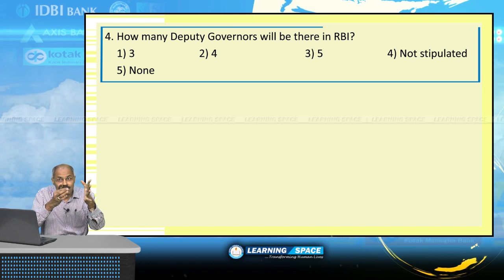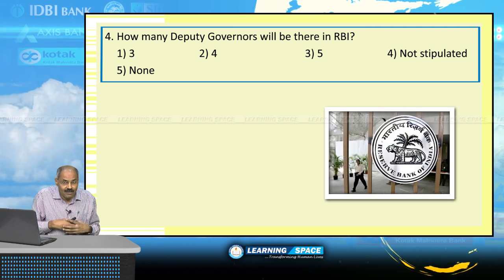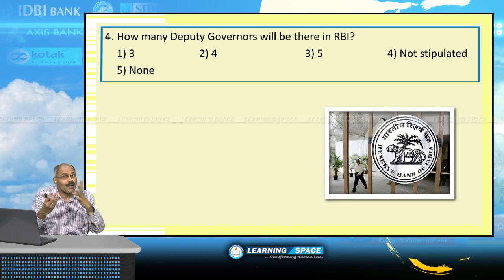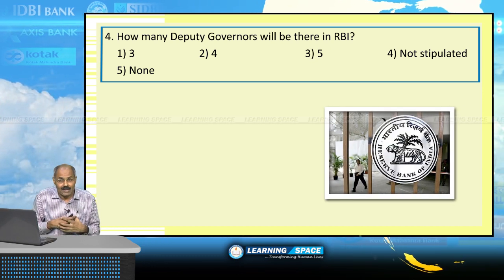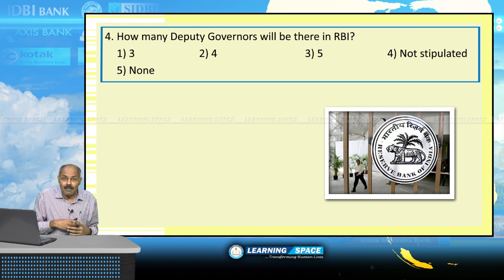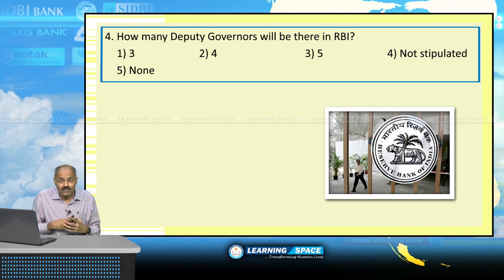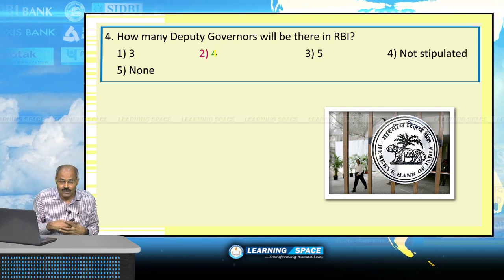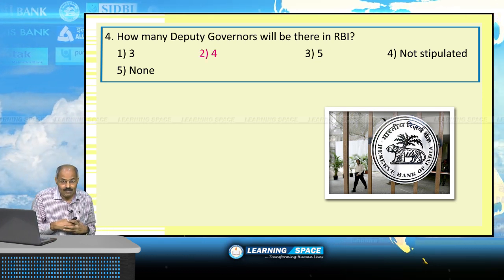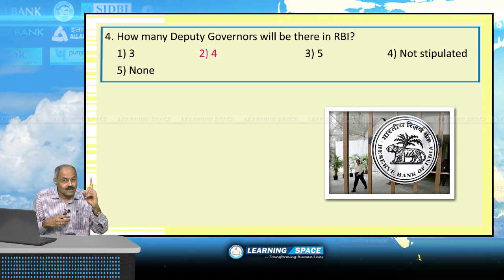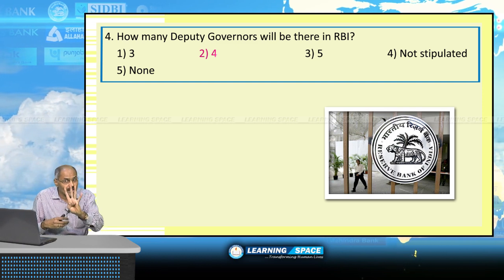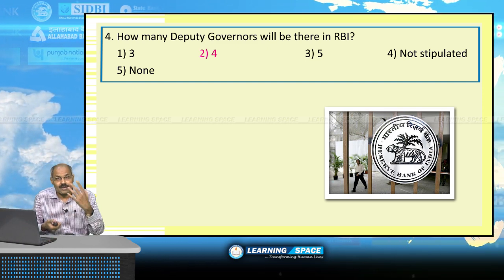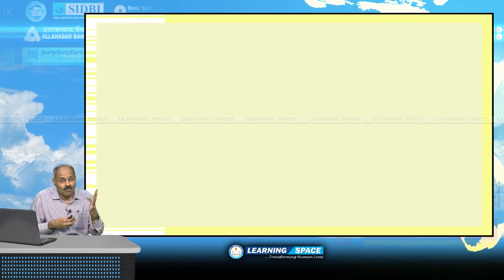How many deputy governors will there be in Reserve Bank of India? Reserve Bank of India can have a maximum of 4 deputy governors — one governor and 4 deputy governors. Please don't forget.